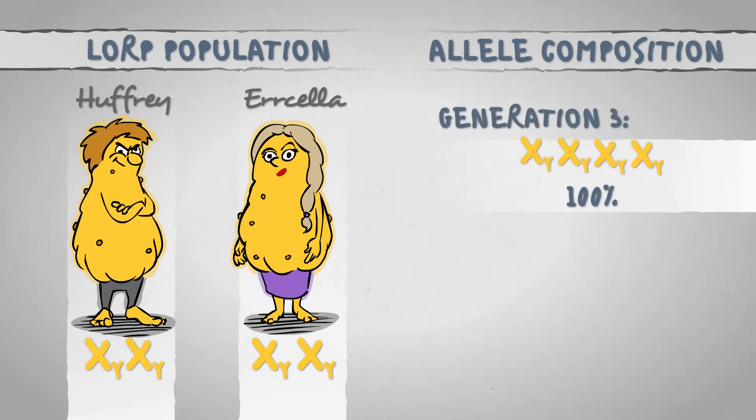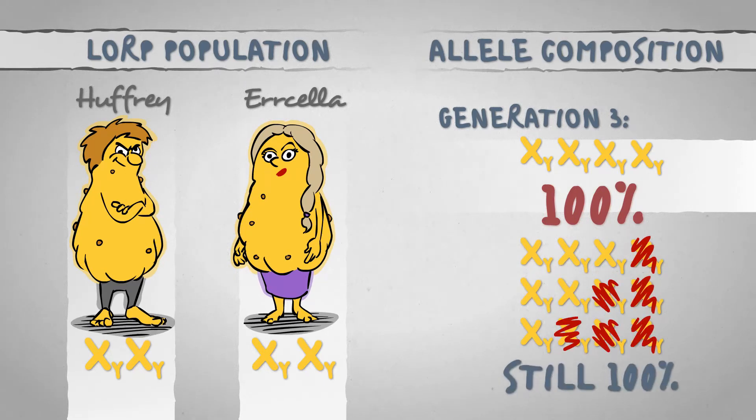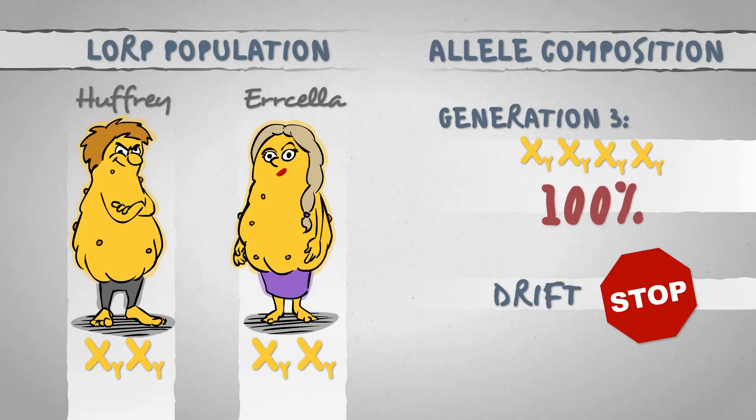When only a single type of allele of a gene remains in the population, losing any number of copies of it will not alter the allele composition anymore, the genetic drift will stop and the allele will become fixed.